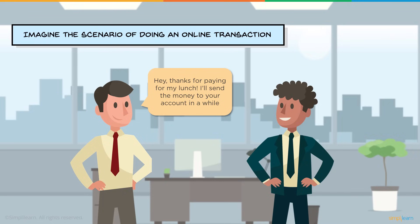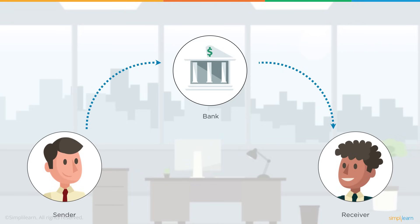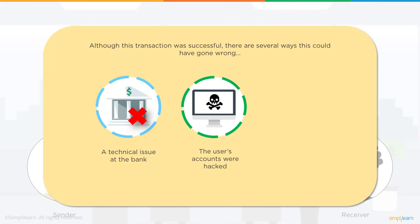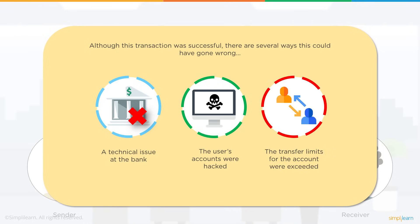Imagine doing an online transaction — thanking your friend for paying for your lunch and sending money to their account. This transaction could go wrong in several ways: there could be a technical issue at the bank, their systems could be down or machines not working properly, creating a central point of failure. The user's accounts could get hacked through a DDoS attack or identity theft. Or the transfer limits for that account could be exceeded.